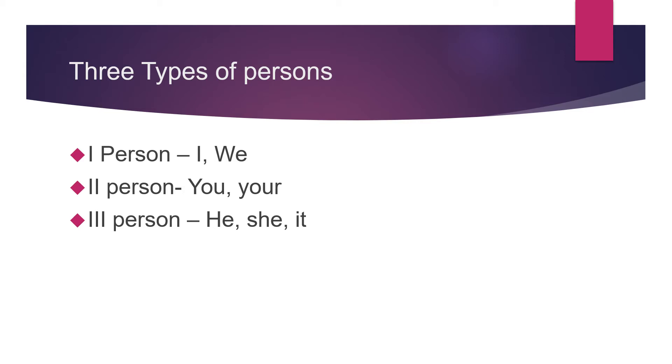There are three types of person. First person: I, we. Second person: you, your. Third person: he, she, it.